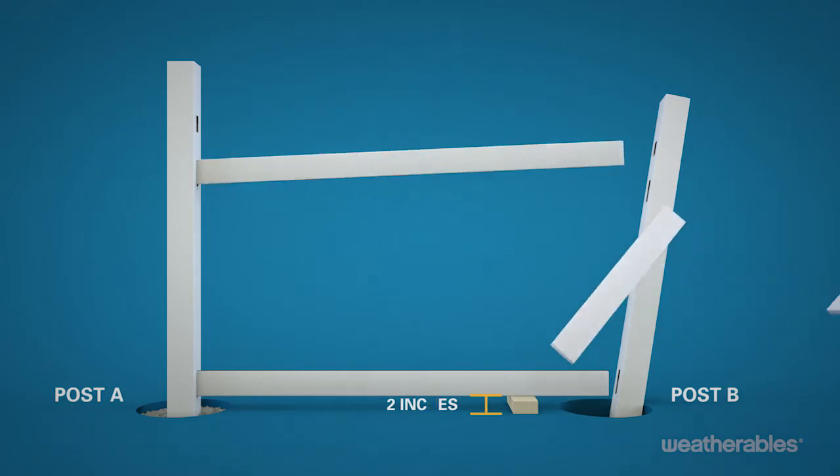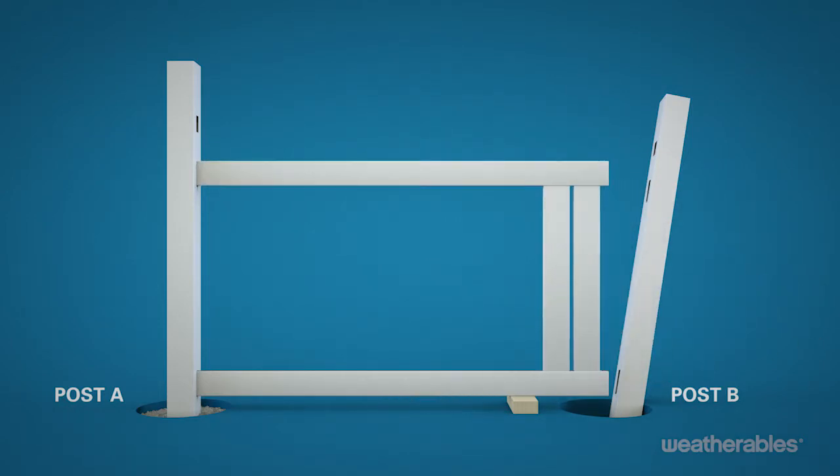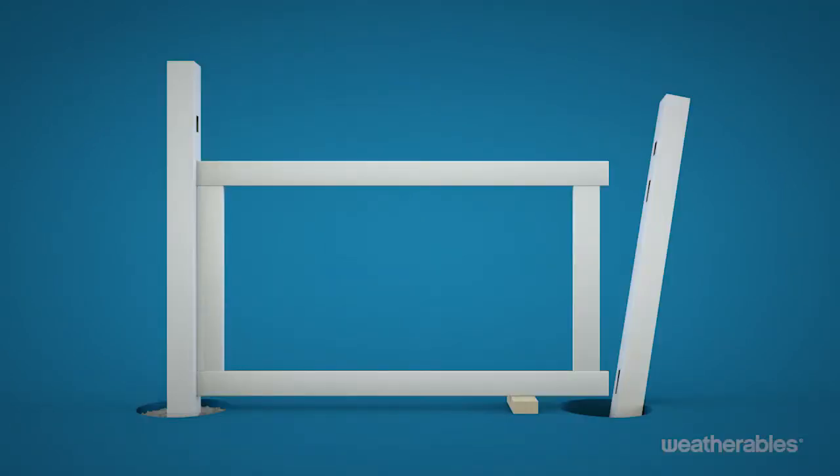Slide the first two tongue and groove pickets in between the mid and bottom rails. Continue sliding the first picket between the mid and bottom rails until it's approximately 12 inches from post A. Then, slide the U channel into place before sliding the picket the remainder of the way toward post A until it is flush with the post. Leave the second picket in place near post B.